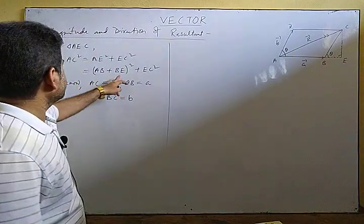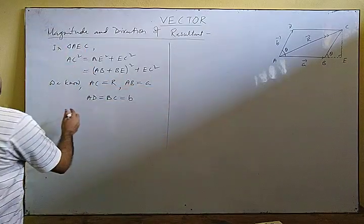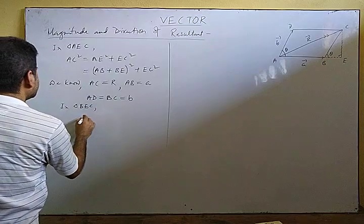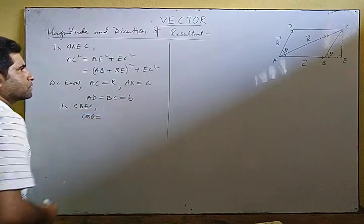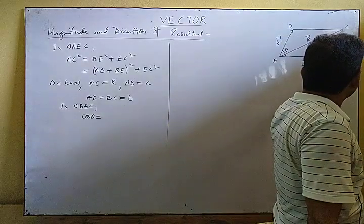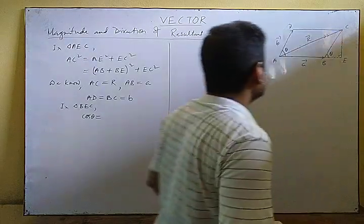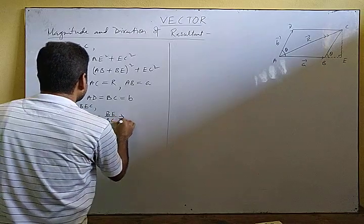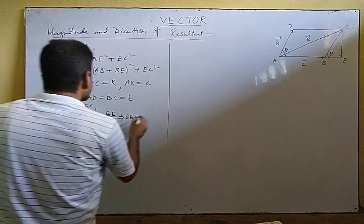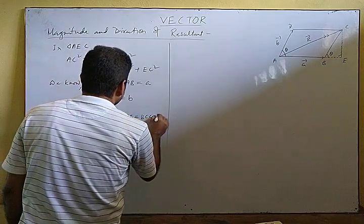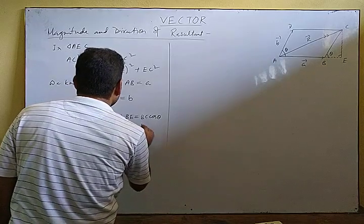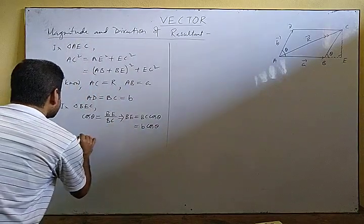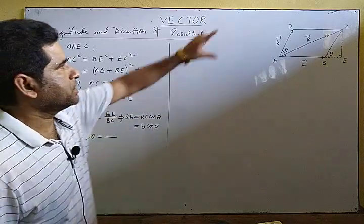In right angle triangle BEC, using the cosine law: cos θ = base / hypotenuse = BE / BC. This implies BE = BC cos θ. Since BC equals the magnitude of vector B, we get BE = B cos θ.